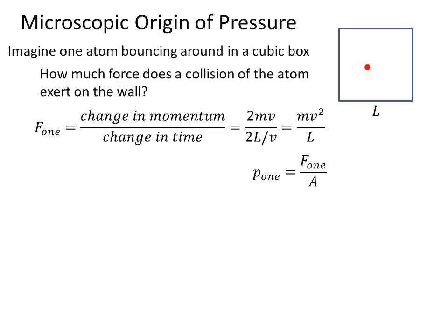Now the pressure due to this one atom is equal to the force due to the one atom divided by the area of the wall. The area of the wall is L squared.